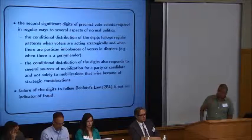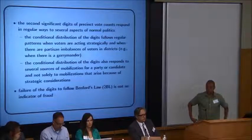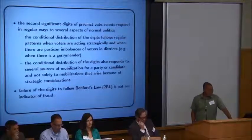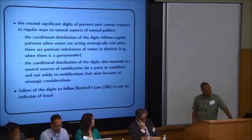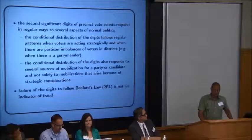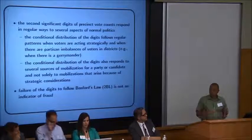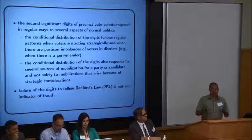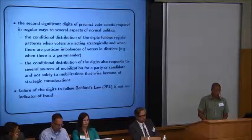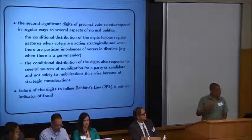I think the things in the first bullet point are true, which is that precinct vote counts respond in regular, meaning reliable, ways to normal political variations — such as district imbalance, which is the polite way of saying gerrymander. This might be helpful to detect the effect of that. Strategies that voters use can also be detected: a standard strategy is if you have three parties and your candidate's going to lose, you might vote for one of the other two parties. That kind of wasted vote argument can actually be detected by these digit tests.